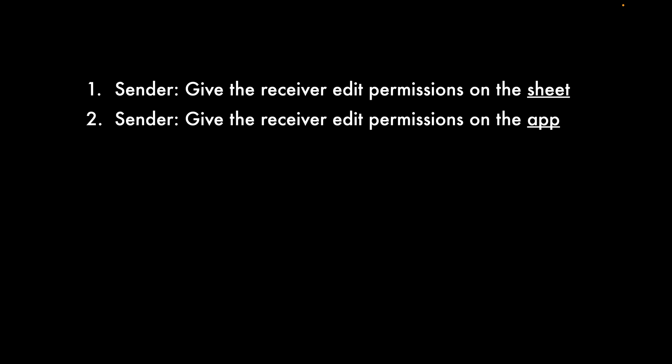There are eight steps for transferring an app. Let's talk through exactly what they are. First, the sender gives the receiver edit permissions on the sheet — basically using the share button to give someone else permission to view and edit that sheet. Next, the sender gives the receiver edit permission on the app itself. If you've ever shared an AppSheet app with someone else, this is basically adding a user to the app and giving them permission not just to use it but to edit it.